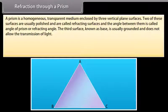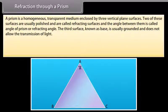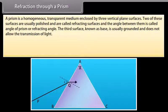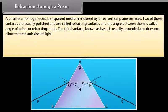Refraction through a prism. A prism is a homogeneous, transparent medium enclosed by three vertical plane surfaces. Two surfaces are polished and are called refracting surfaces, and the angle between them is called the angle of prism or refracting angle. The third surface, known as the base, is grounded and does not transmit light. Consider a monochromatic light ray PQ through glass prism ABC. At surface AB, the ray enters at angle of incidence I, bends towards the normal at angle of refraction R1, and strikes surface AC at R.